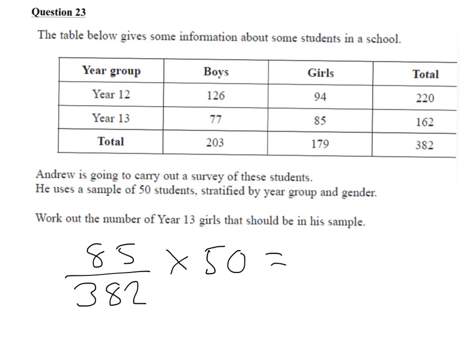Doing that on the calculator gives 11.125. So we need to round that down to 11. The number of year 13 girls that should be in the sample is 11.